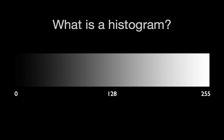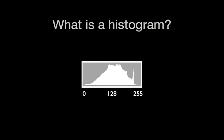Black was given a value of 0, and white was given a value of 255. Middle gray was given a value of 128. These values make up the horizontal axis of the histogram.